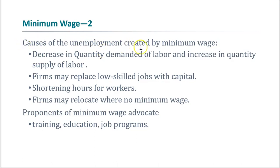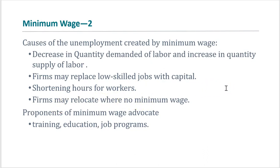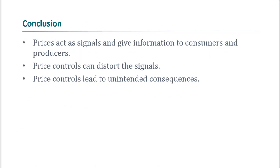The causes of unemployment created by minimum wage include a decrease in quantity demanded of labor and an increase in quantity supplied of labor. For example, firms may use robots, shorten hours of workers, or relocate where there is no minimum wage — many companies have their factories in India or China. Thank you for watching; I will see you next time.